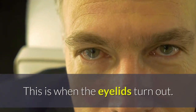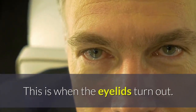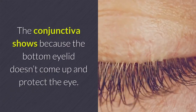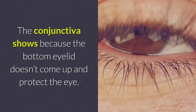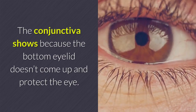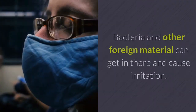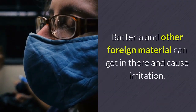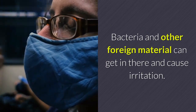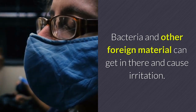Ectropion: a dog with saggy eyelids likely has ectropion. This is when the eyelids turn outward. The conjunctiva shows because the bottom eyelid doesn't come up to protect the eye, allowing bacteria and other foreign material to get in and cause irritation.